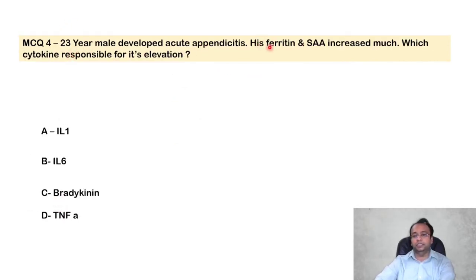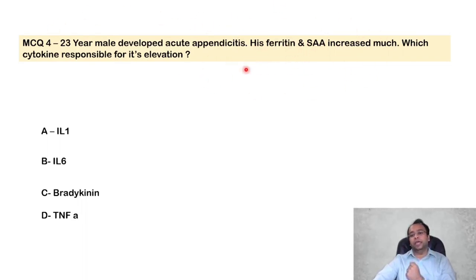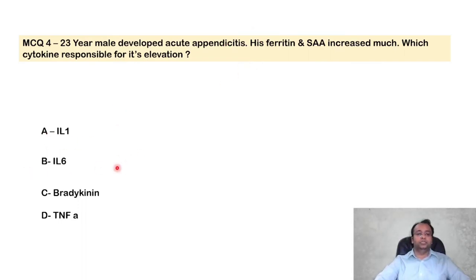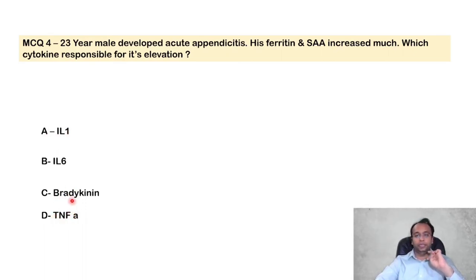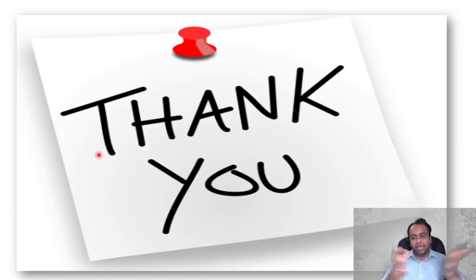MCQ 4: A 23-year-old male developed acute appendicitis. His ferritin and serum amyloid-associated protein were increased. Which cytokine is responsible? Options: IL-1, IL-6, bradykinin, or TNF-alpha. IL-1 and TNF-alpha mainly lead to fever and systemic inflammation. Bradykinin leads to pain. Acute phase reactants are increased because of interleukin-6. The answer is IL-6. That covers all mediators of inflammation — hope you enjoyed this video. Take care and goodbye.